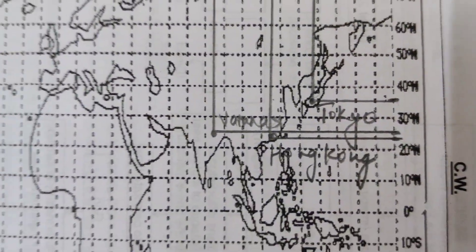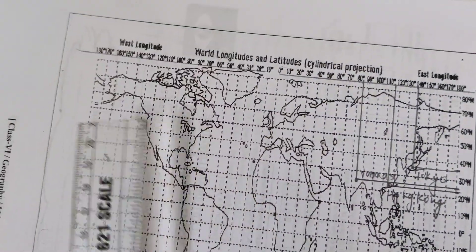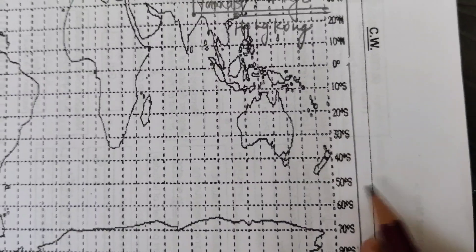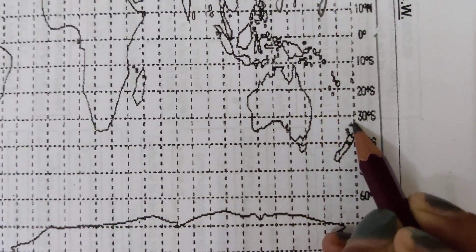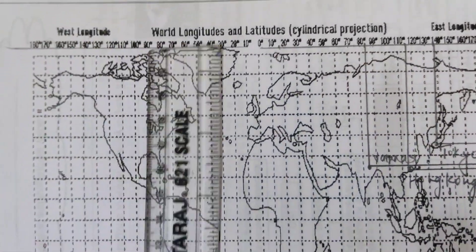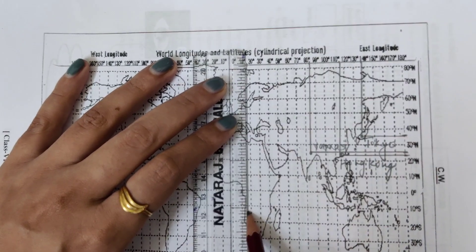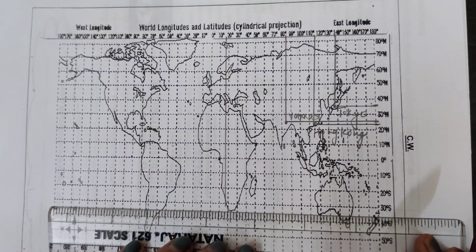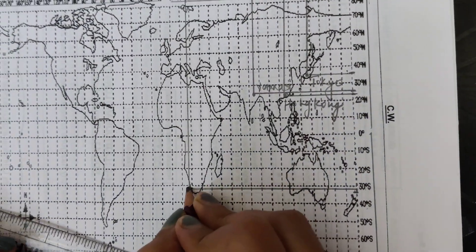Next, let's solve for Cape Town: 33 degrees south and 18 degrees east. 33 degrees south is in the downward direction from zero. Between 30 to 40, mark 33 here. The next is 18 degrees east, which lies between 10 to 20. Be very careful while drawing the lines to intersect, and always use pencil. This is Cape Town.